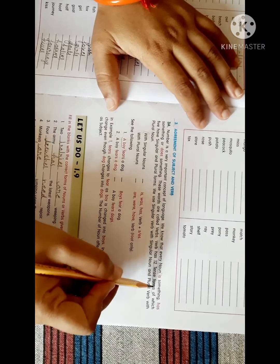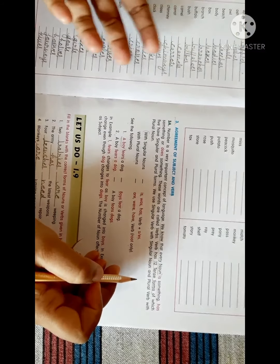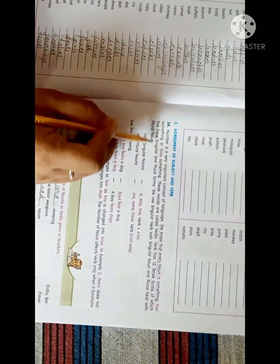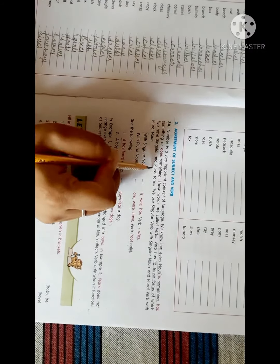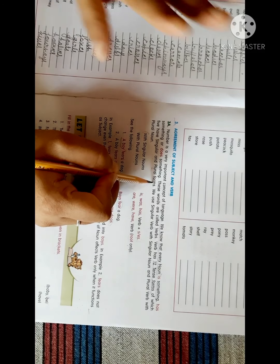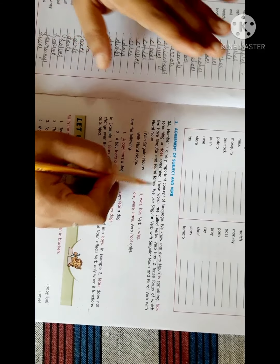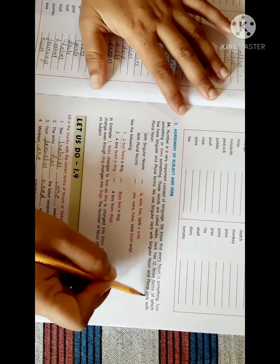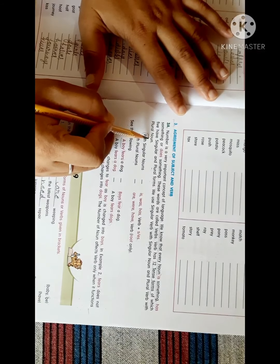Verb has twelve tense forms of which five have singular or plural forms. We use singular verb with singular noun and plural verb with plural noun. Is that clear?